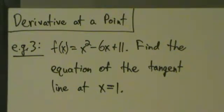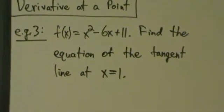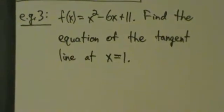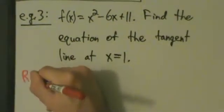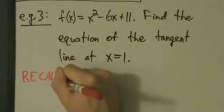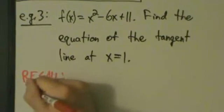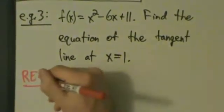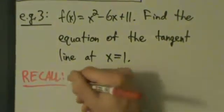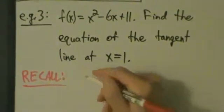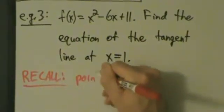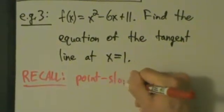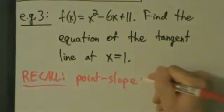There's a little more going on here because we're doing more than just finding the derivative — we're finding the equation of a line. So before we move on, let's recall what the equation of a line actually is. There are many different forms, but the one that's going to be useful to us is point-slope form.